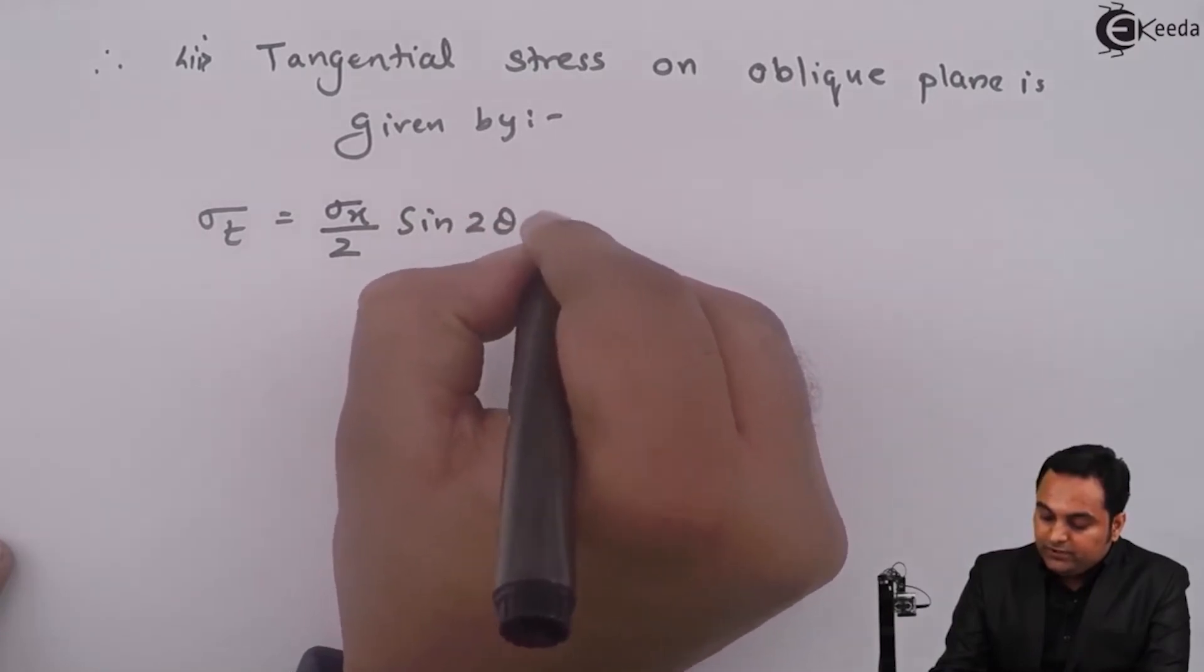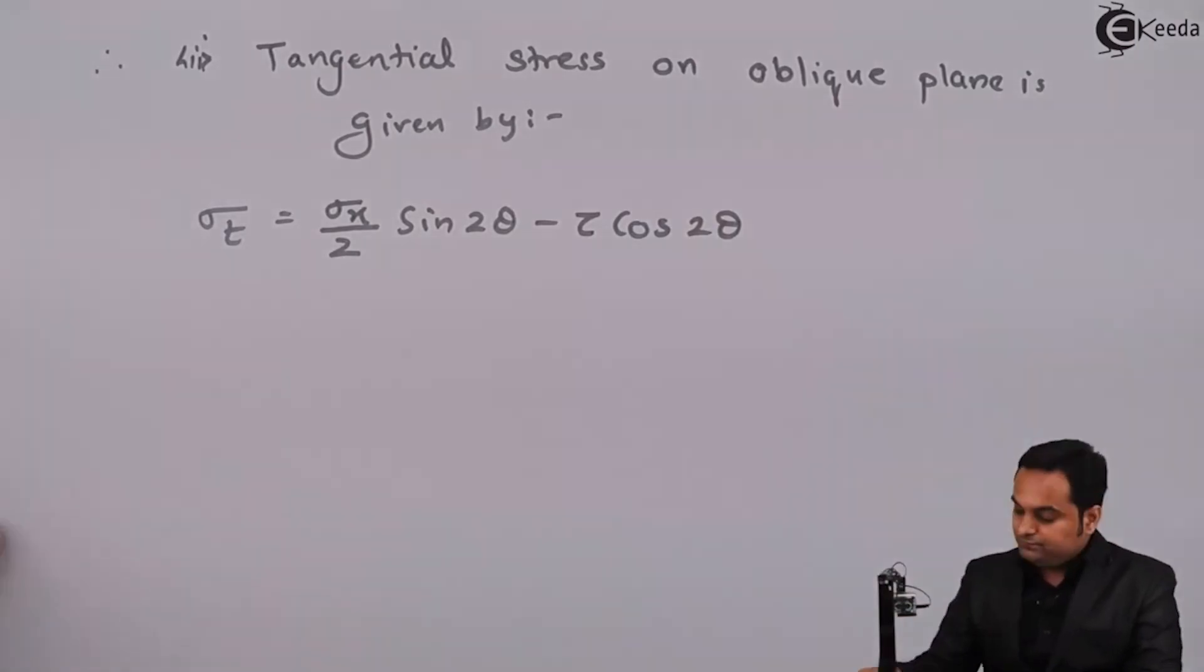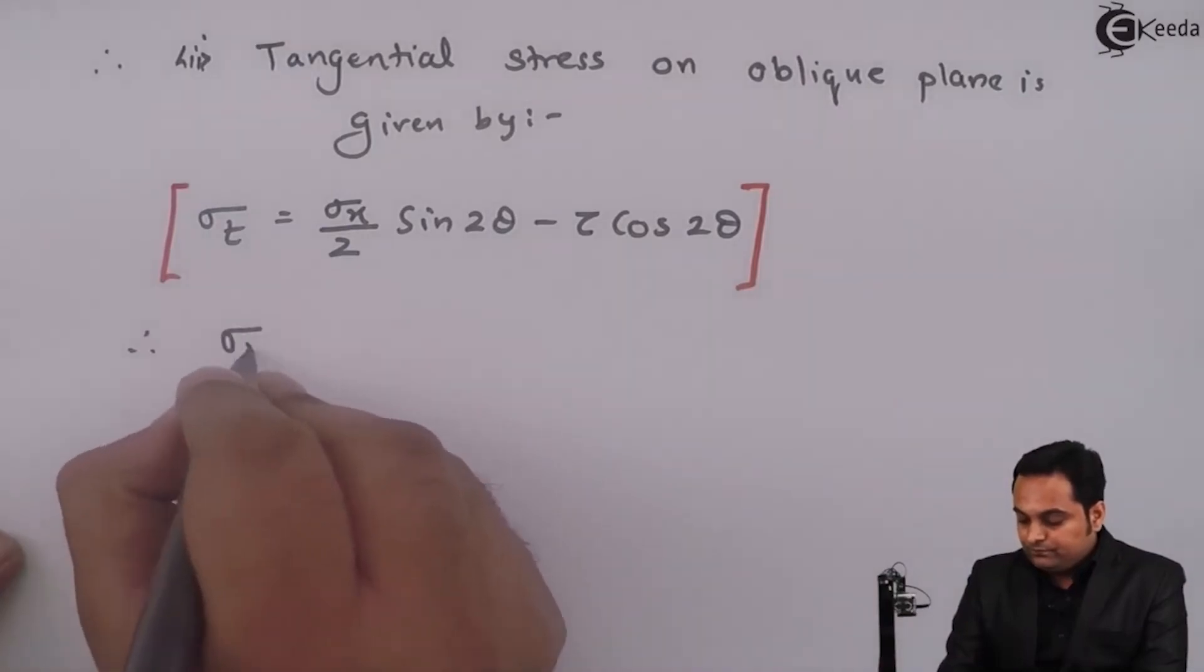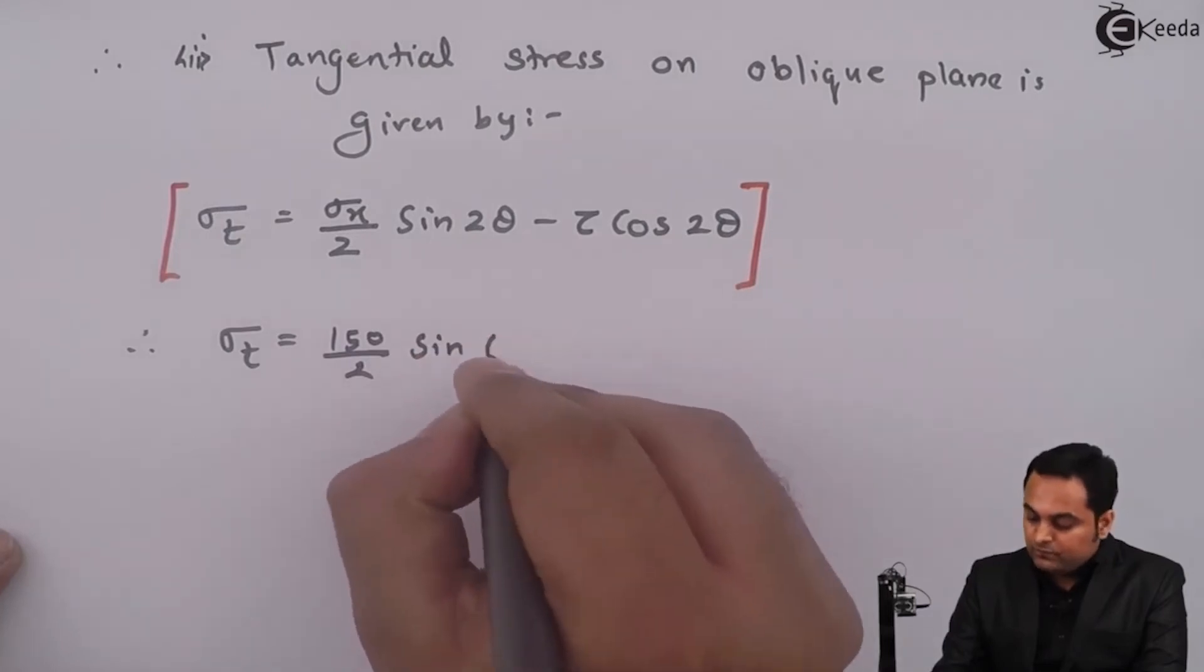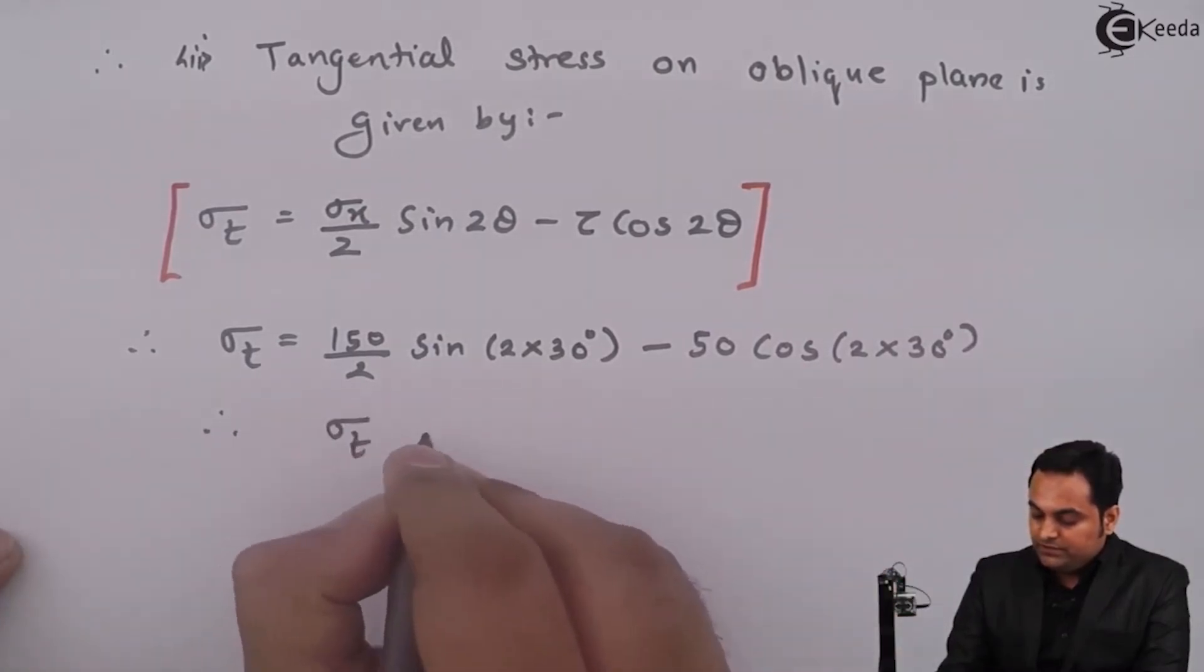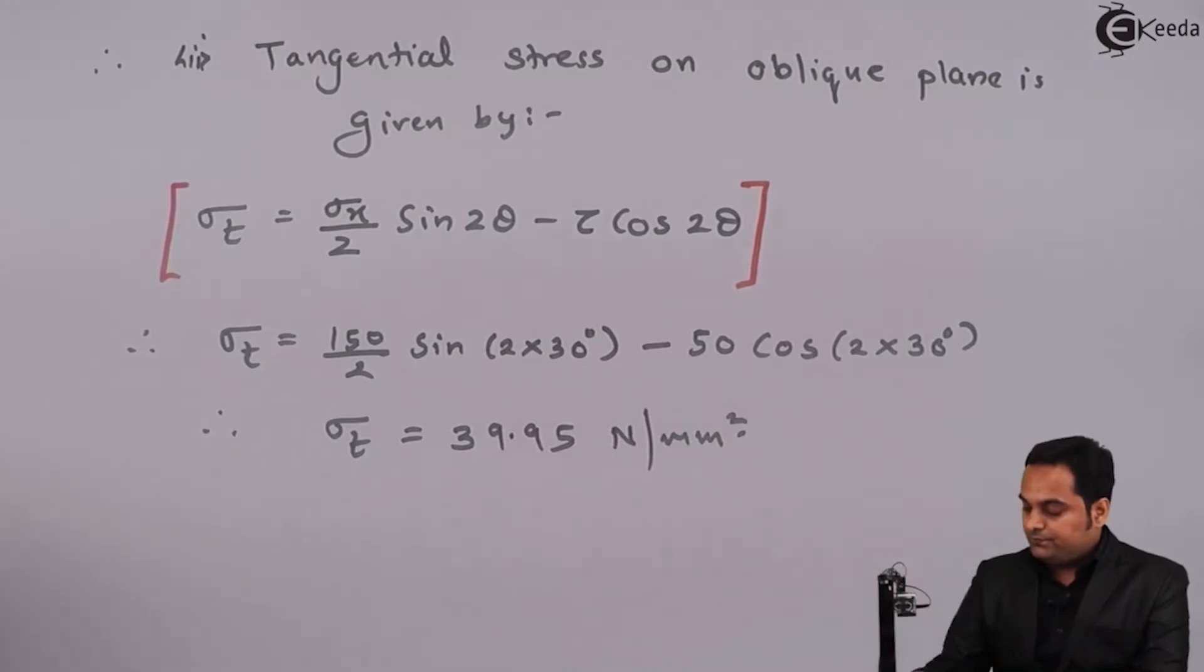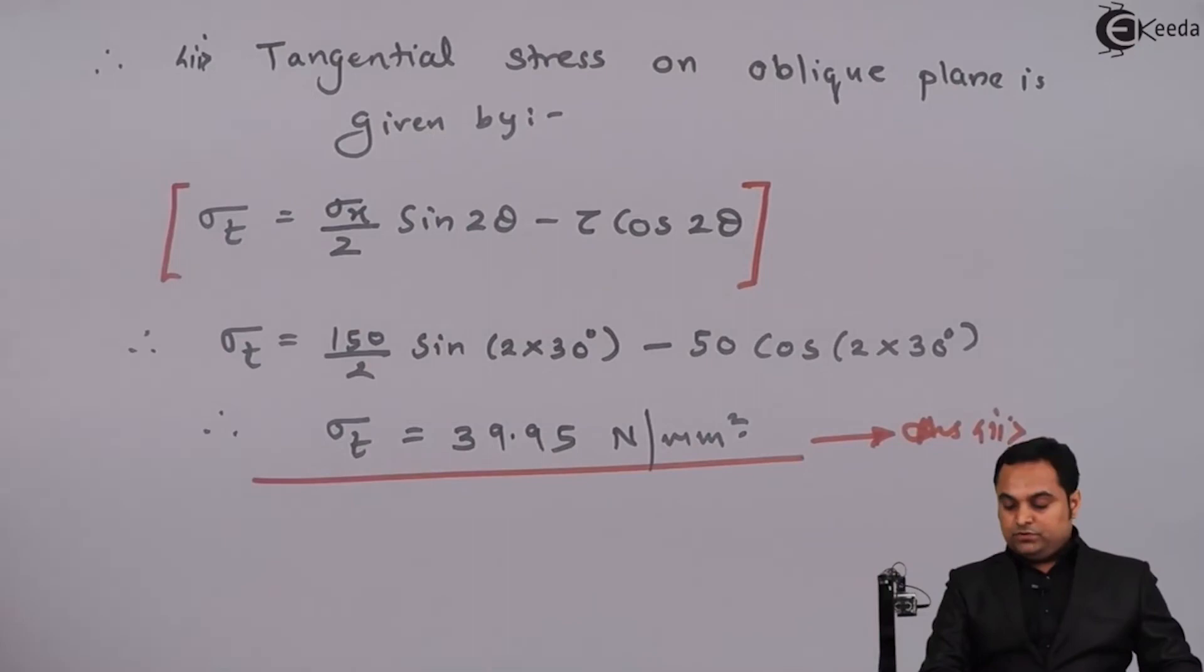Sine 2 theta minus tau cos 2 theta. So putting the values here: sigma x is 150, theta is 30 degrees. So here sigma t comes out to be 39.95 Newton per mm square. So this is the second answer.